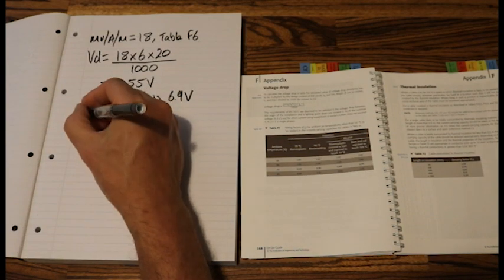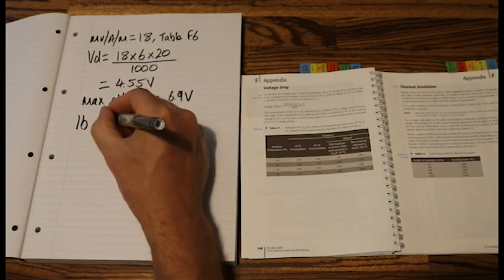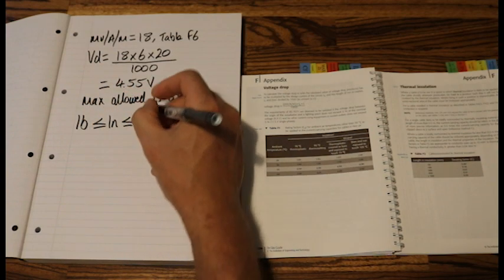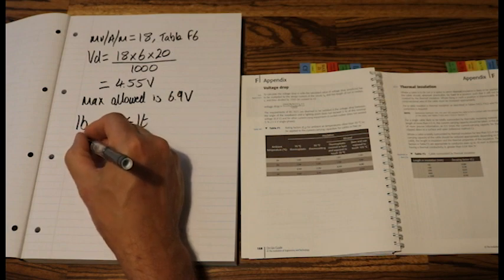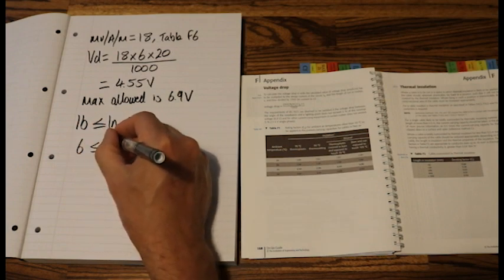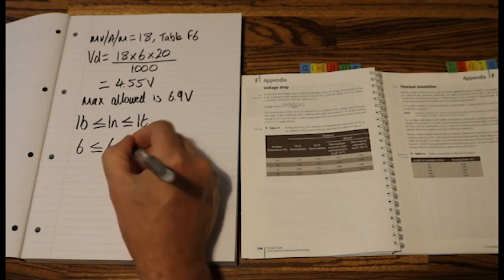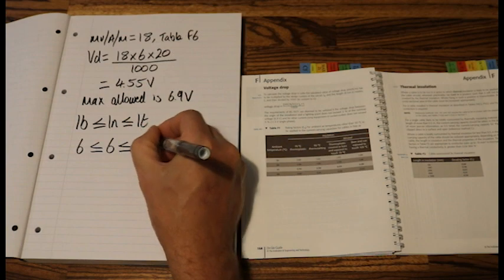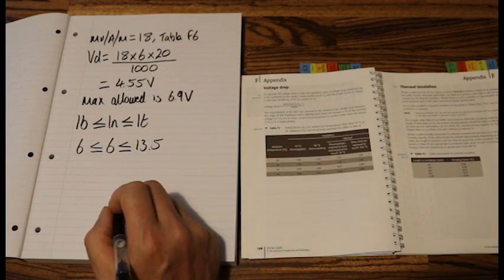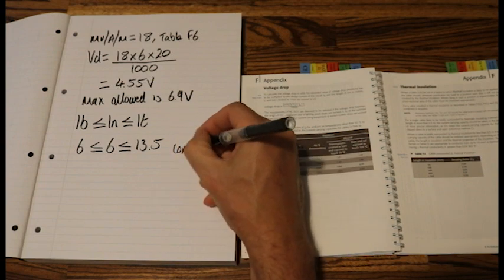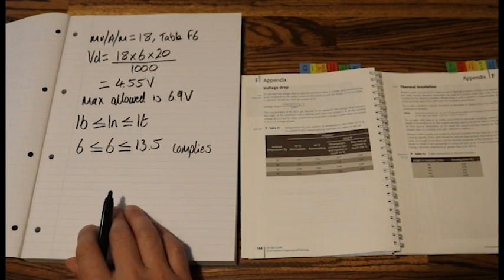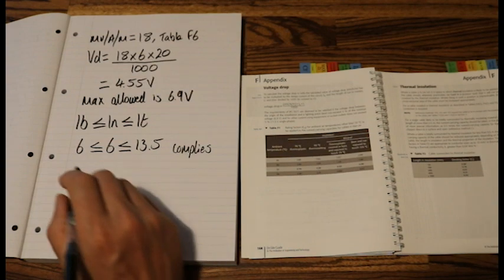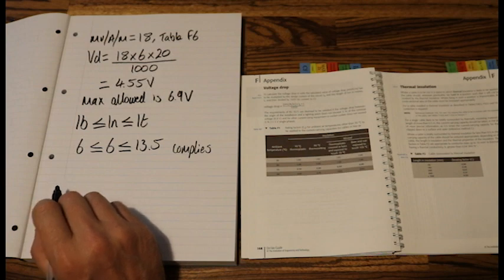Which is that statement of IB is equal to or less than IN. Which is equal to or less than IT. Let's input our values. So our IB was 6 is equal to or less than 6. Which it is. 6 is equal to or less than 13.5. Now that reads true. So we write that complies. And there we have it. So the final part of the question says. Design a circuit that is fully compliant with BS7671.